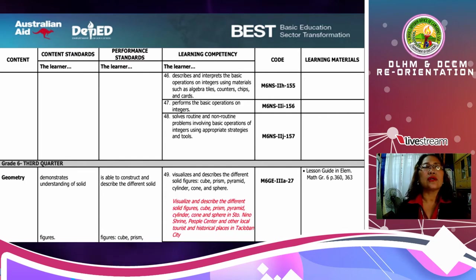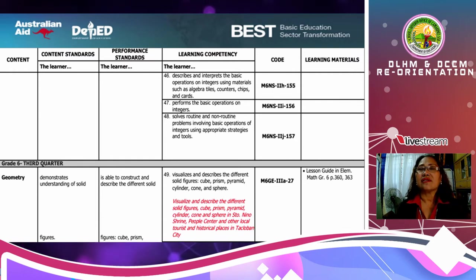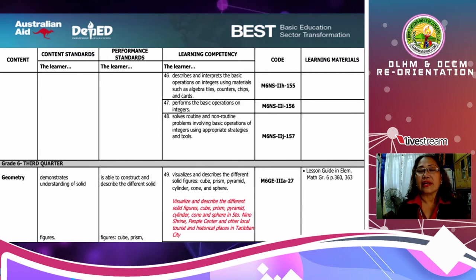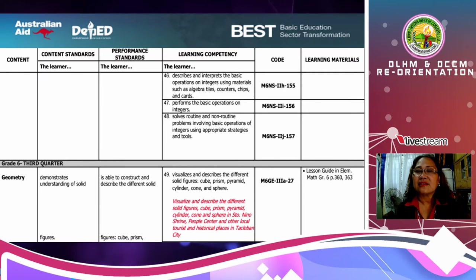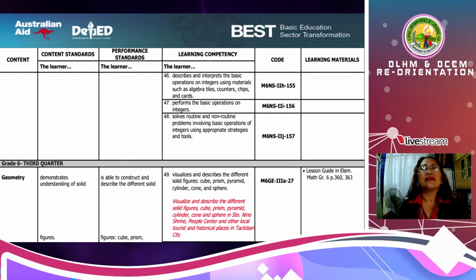You have there: describes and interprets the basic operations on integers using materials such as algebra tiles, counters, chips, and cards; performs the basic operations on integers — there is the code. And in the localized material, they place: visualize and describe the different solid figures — cubes, prisms, pyramids, cylinders, cones, and spheres — in Santo Niño Shrine, People's Center, and other local tourist and historical places in Tacloban City. Meaning, some learning competencies were addressed locally.